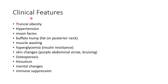Let us see about the clinical features of Cushing syndrome. There will be truncal obesity, hypertension, moon facies, buffalo hump which is fat on the posterior neck, muscle wasting, hyperglycemia due to insulin resistance, and skin changes like purple abdominal striae and bruising.